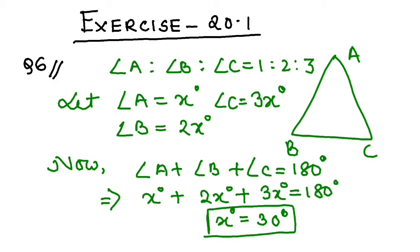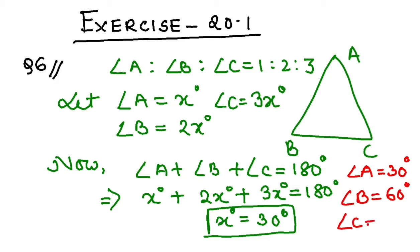If x is 30, angle A will be 30 degrees. Angle B will be 2 times x, that is 60 degrees. And angle C will be 3 times x, that is 90 degrees. So this is how we solve question number 6.